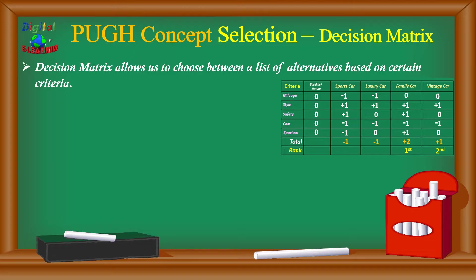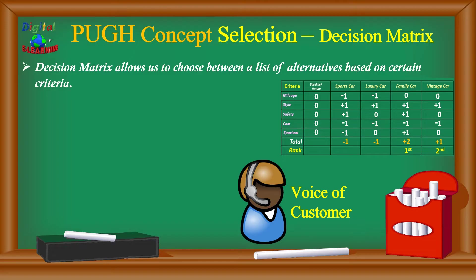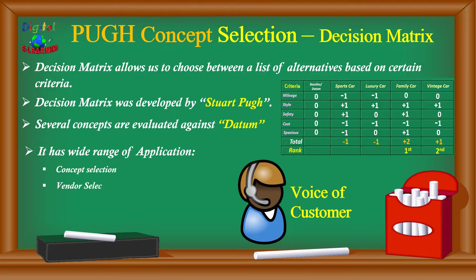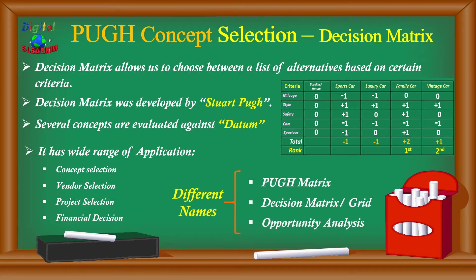The decision matrix is normally employed after we have captured the voice of the customer. It is also known as the Pugh matrix, developed by Stuart Pugh, and it helps determine which items or potential solutions are more important or better than the other options. Several concepts are evaluated against a datum or reference concept, which is the best current concept the team has. The Pugh matrix can be used in a wide range of applications like concept selection, vendor selection, project selection, and financial decisions. It is also known by different names such as decision matrix, decision grid, and opportunity analysis.